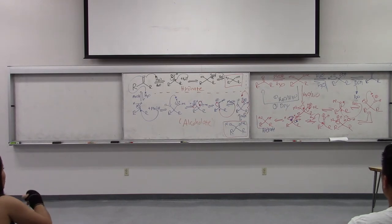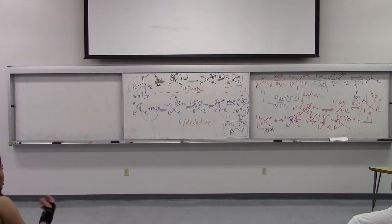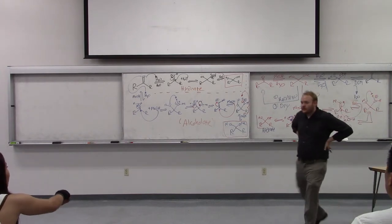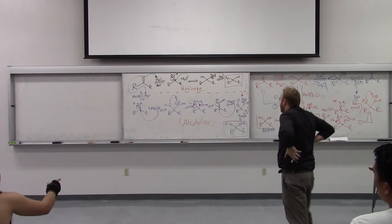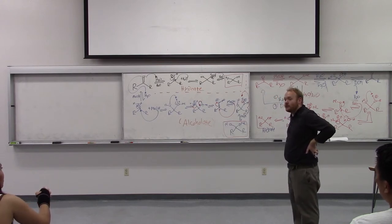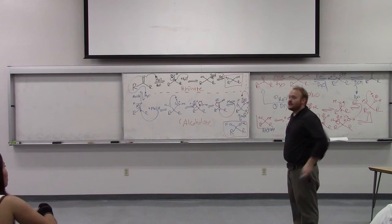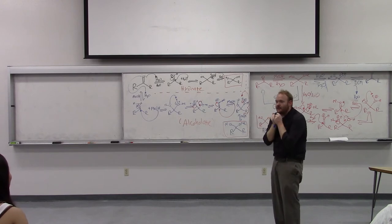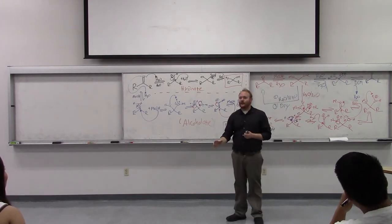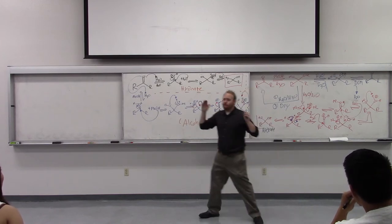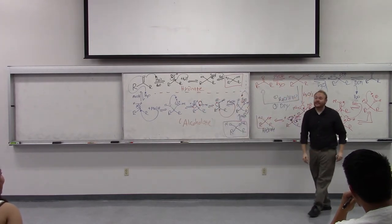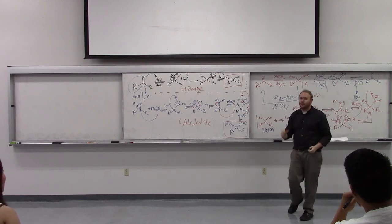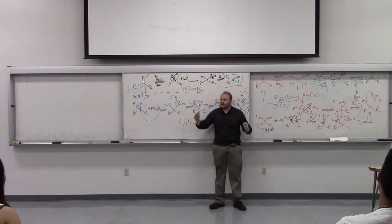Student: So when we're going back to a carbonyl from an acetal, it's only with water, right? We can't use methanol? Professor: Right — if you're going back to the carbonyl, you go in aqueous conditions; you're throwing some water in. If methanol is your solvent, everything's going to be shifted toward the acetal, because methanol is one of the reacting species, and by Le Chatelier's theorem, adding a starting material shifts equilibrium toward the product. So acetal chemistry is Le Chatelier's theorem at work.